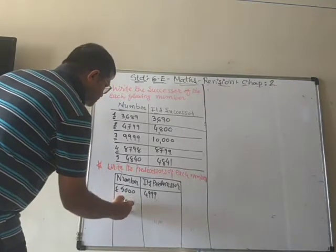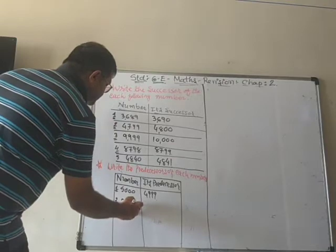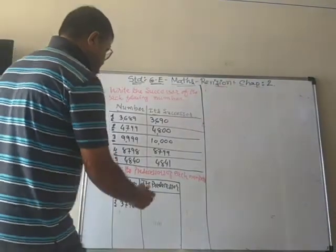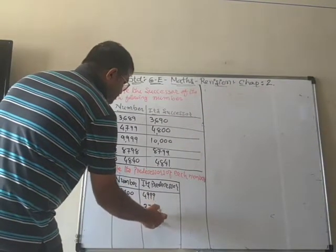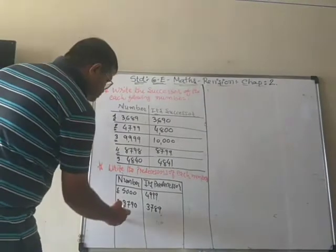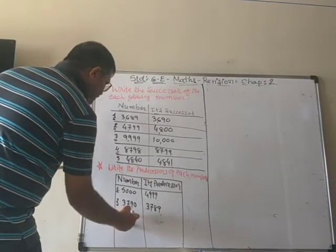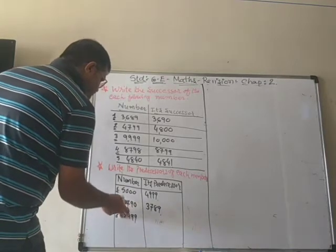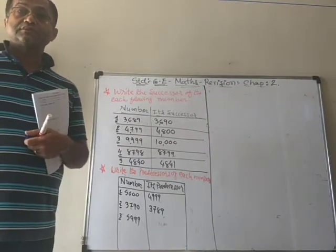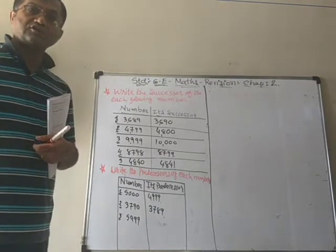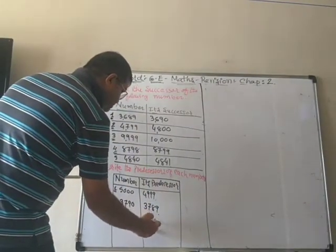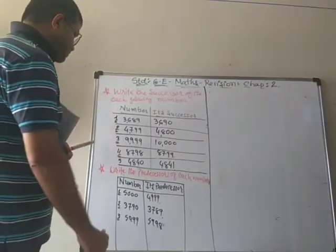Second number: 3790. From 90 subtract one you get 89, so the answer is 3789. Next: 5999. Don't write down the successor by mistake — here we have to subtract one, so the answer is five thousand nine hundred and ninety-eight.